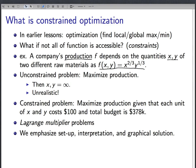You should choose x equals infinity, y equals infinity, and you'll produce an infinite amount of stuff. Obviously, this is very unrealistic. And the reason is that companies have constraints. And in particular, they can't have an infinite amount of raw materials, because they only have a certain amount of money.